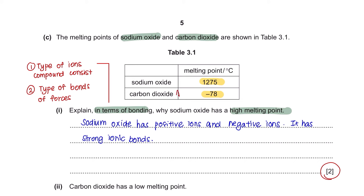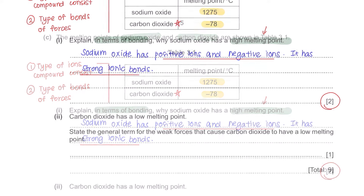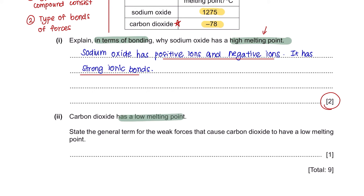Part C: the melting points of sodium oxide and carbon dioxide are shown in Table 3.1. Part 1: sodium oxide has a high melting point because it has positive ions and negative ions, and there are strong ionic bonds — also described as electrostatic force of attraction. Part 2: carbon dioxide has a low melting point. The general term for the weak forces causing this low melting point is weak intermolecular forces.